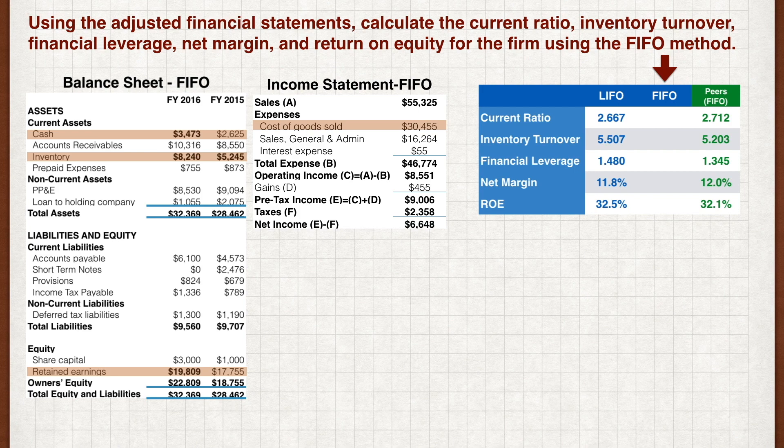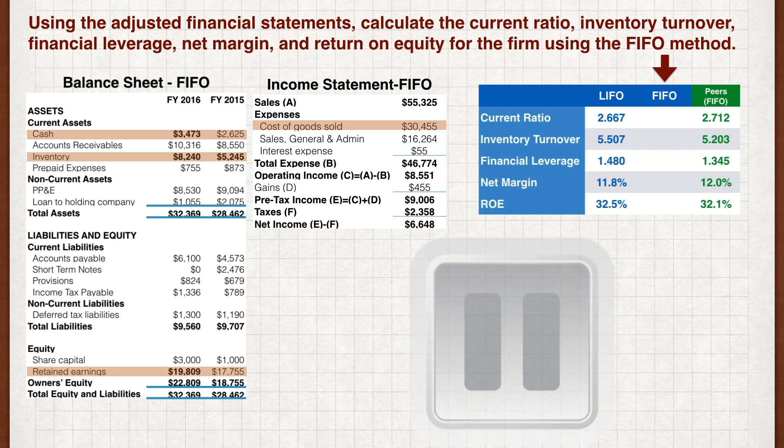With the adjusted financial statements, see if you can calculate the current ratio, inventory turnover, financial leverage, net margin, and return on equity for the firm using the FIFO method. The ratios under LIFO have already been calculated. Pause the video now to work out your answers.